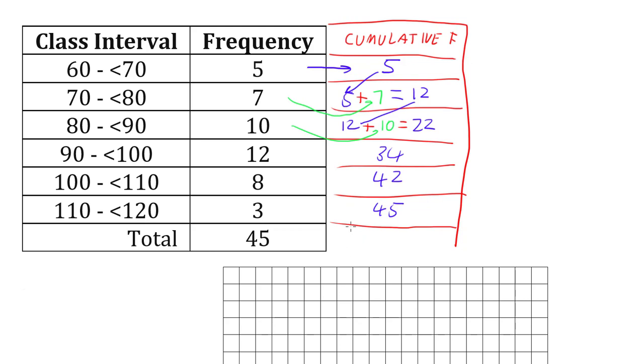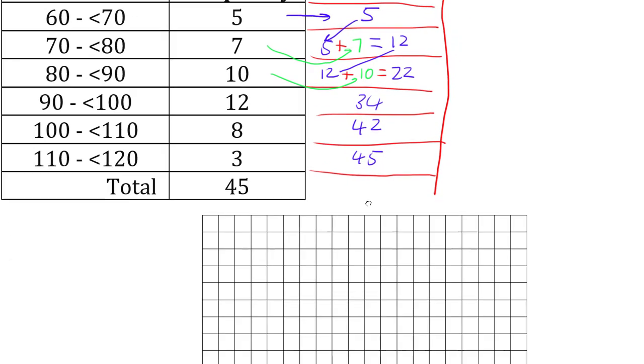So now we can put this information onto our ogive, and our ogive is a graph of this information of cumulative frequency to class or score. So we go to our graph, I've got a grid here to help us, and we draw up our axes.